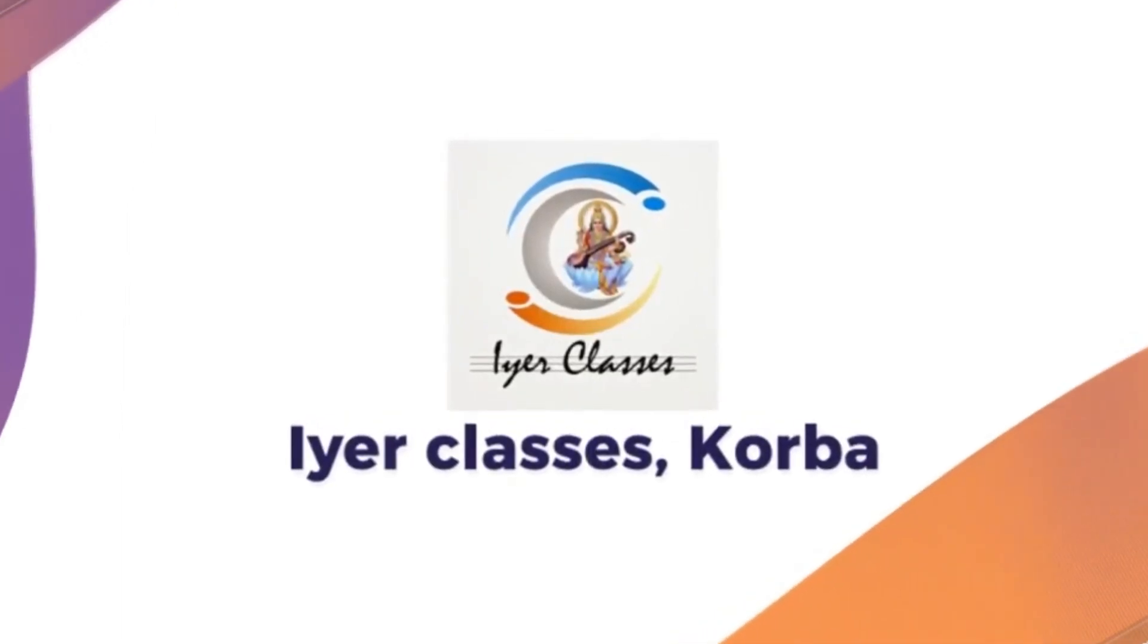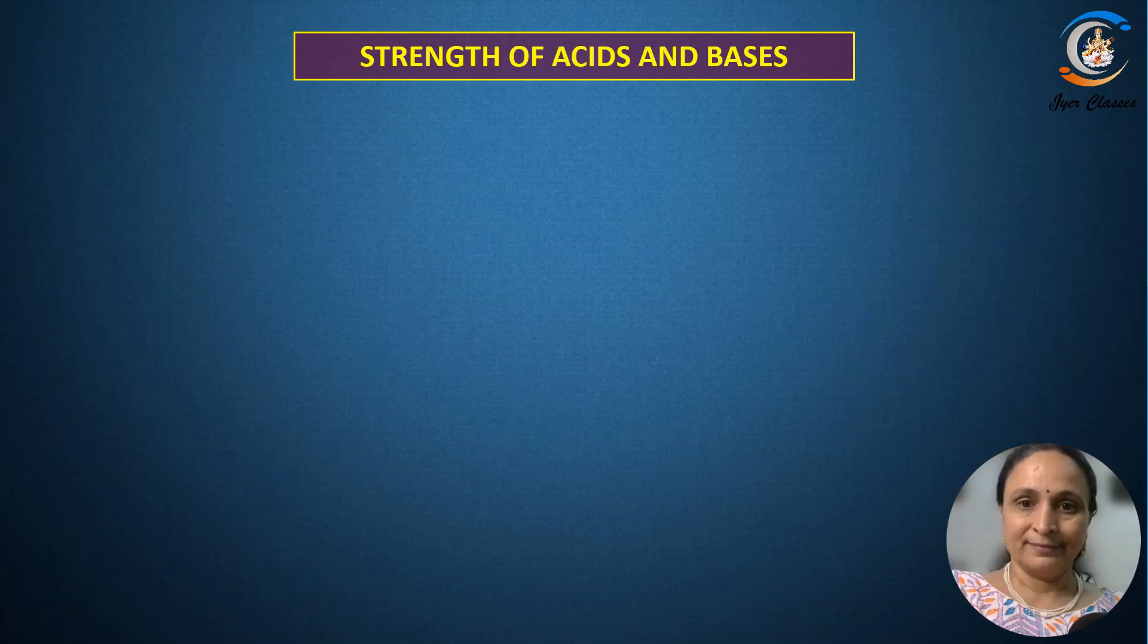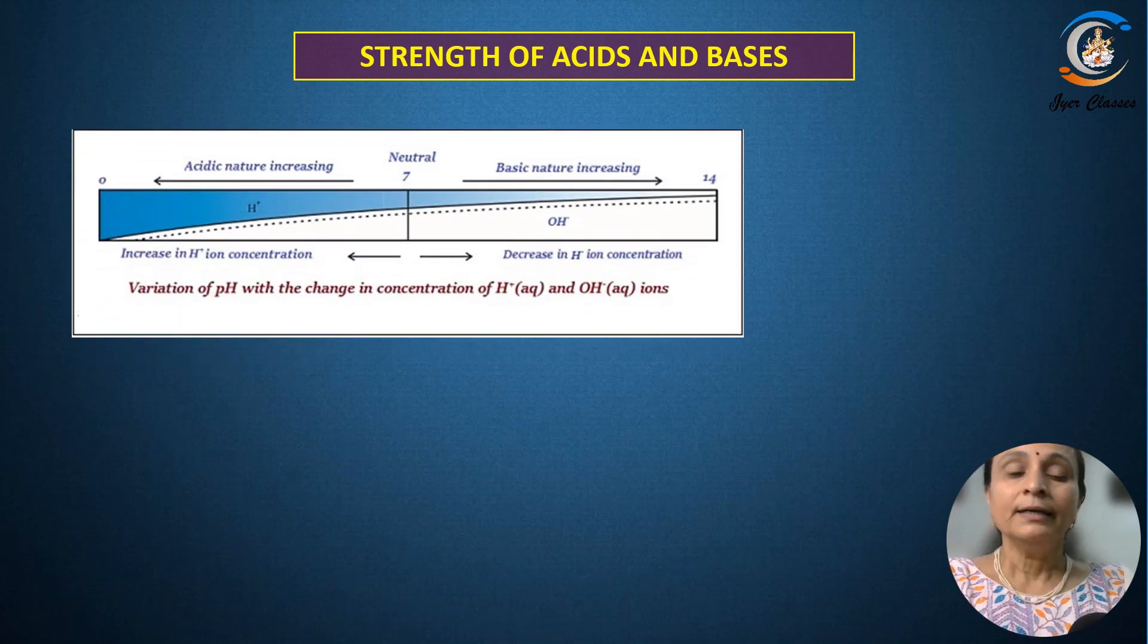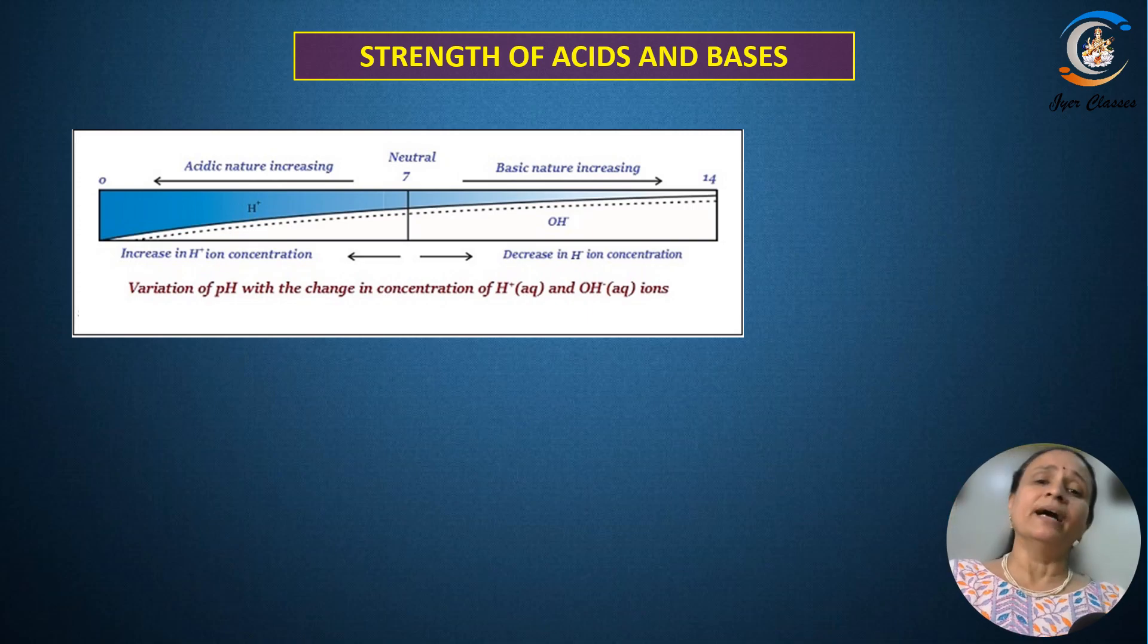Let us now introduce the pH scale. How do you measure the strength of an acid and the base? This can be done by a scale which is called as a pH scale. pH scale is actually the negative logarithm of the hydrogen ion concentration in a solution. This is having the number starting from 0 till 14.